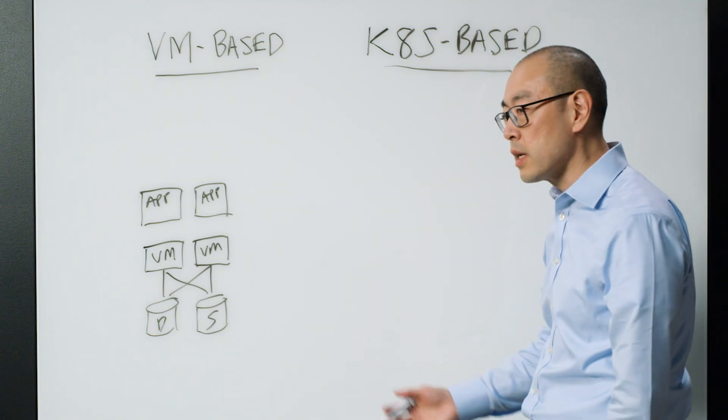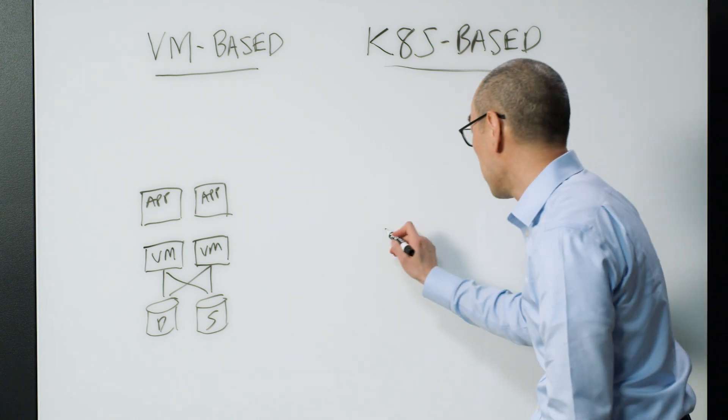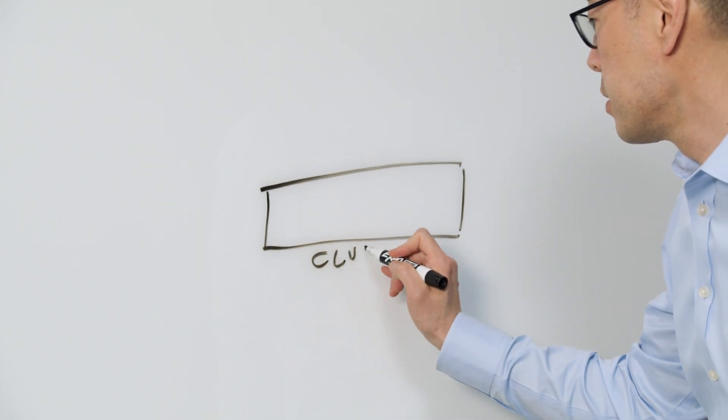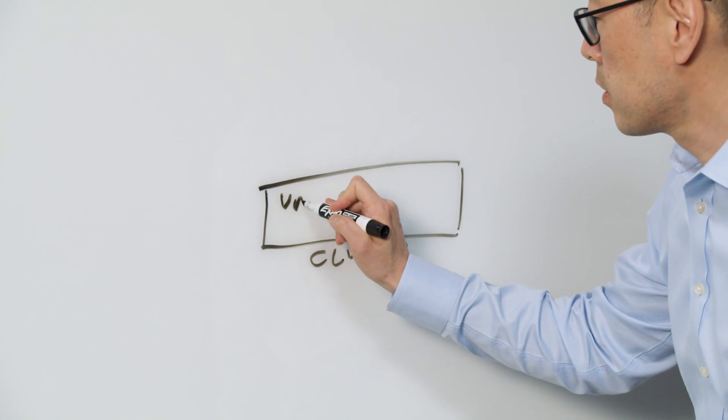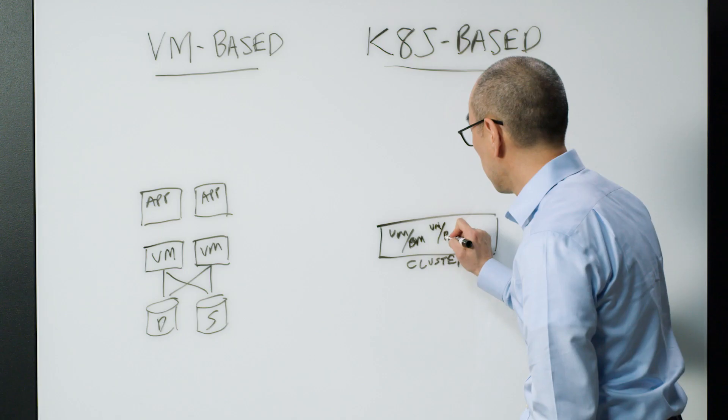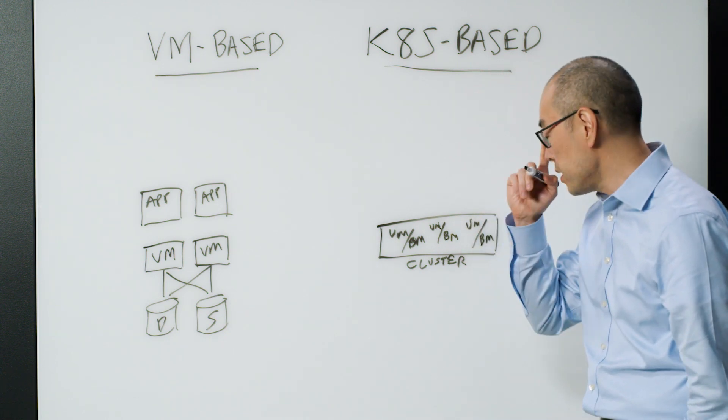If you look at Kubernetes, at the end of the day you're still deploying some type of infrastructure, except the names are different. So in Kubernetes they deploy what's called a cluster, and this can be a set of virtual machines or bare metal machines.